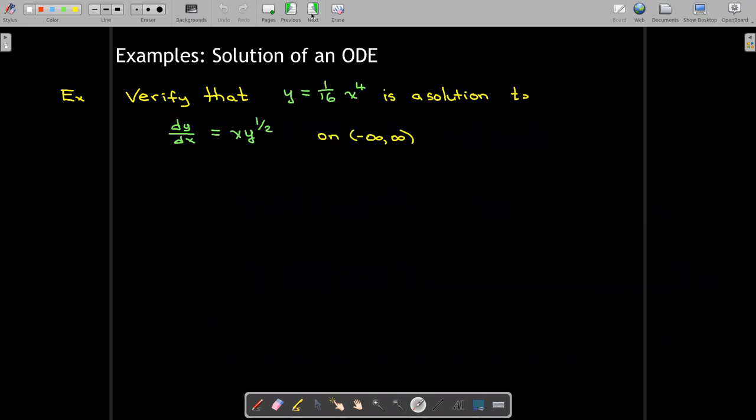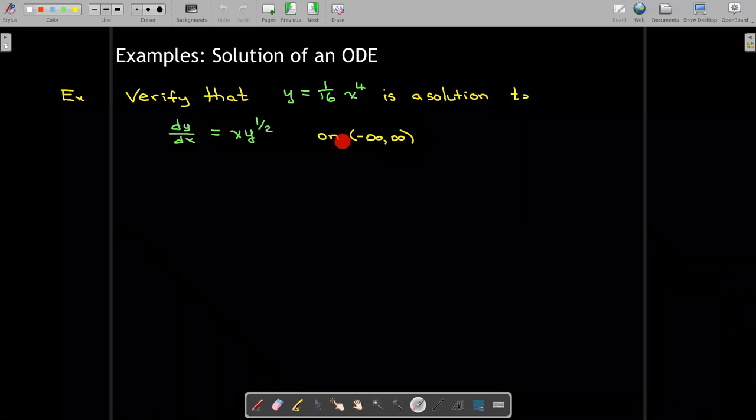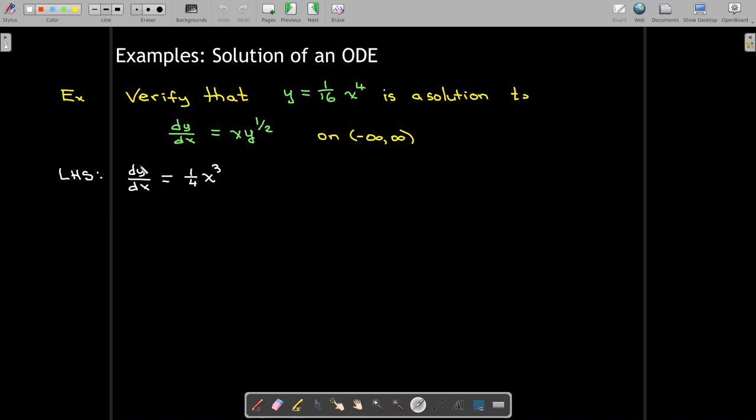Let's look at another differential equation. Here we have only one term in our solution, y equals 1/16th times x to the power of 4. We want to verify that that's a solution of dy by dx equals x times y to the 1 half power. And our interval here is going to be negative infinity to infinity. We'll start with the left-hand side. If I take the derivative with respect to x of 1/16 x to the power of 4, I get 1/4 x cubed. And looking at the right-hand side, I just need to multiply x times y to the 1 half power. The 1 half power is the same as the square root. So, x times the square root of 1/16th x to the 4th. I multiply that out. I get 1/4 x cubed. So, my left-hand side equals my right-hand side. And we have verified that that is a solution.